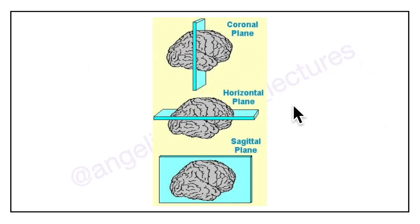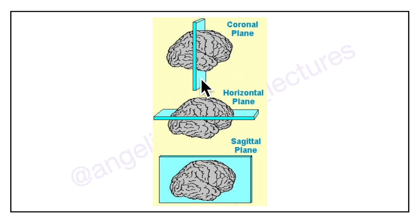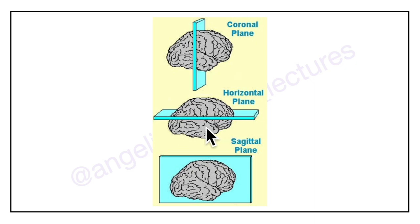Now before moving on, let's look at the different planes that I will be using in the coming slides to explain in detail about the cerebrum. This is the coronal plane or coronal cross section in which the cerebrum is divided into anterior and posterior halves. This is the horizontal section where the cerebrum is divided into superior and inferior parts, and finally the sagittal section which shows the left and right halves.